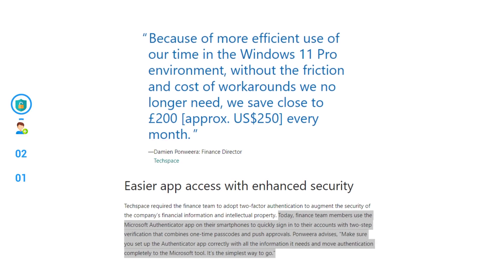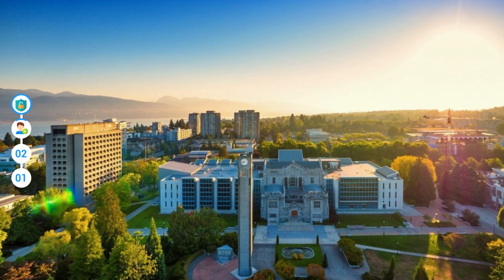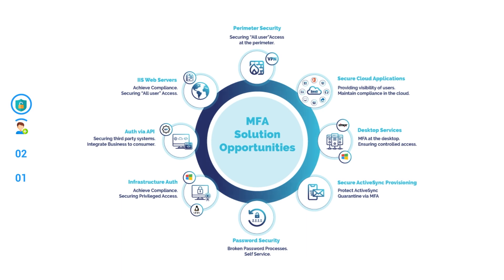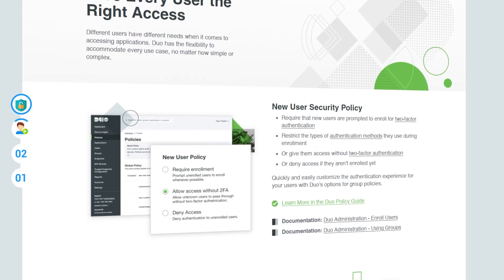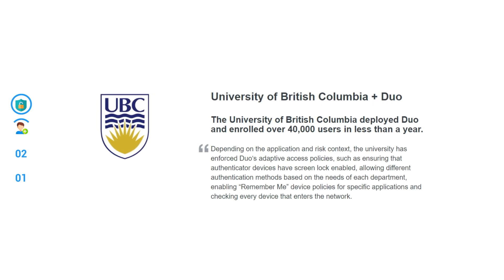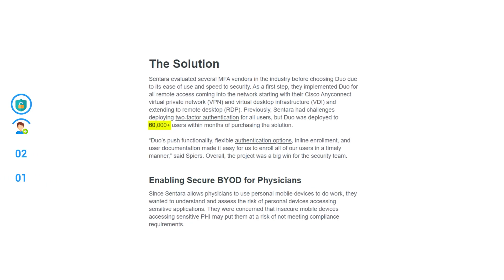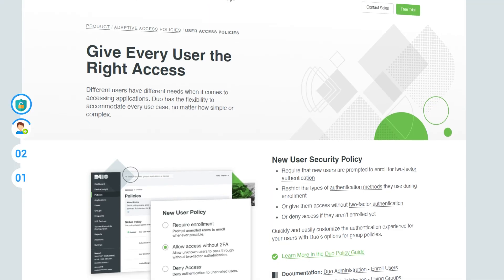Since these case studies are built into other Microsoft products such as the text-based story on adopting Windows 11, it is hard to tell whether the user experience is more about Windows or more about the Microsoft Authenticator. By comparison, Duo stands out for its seamless user enrollment process. For example, the University of British Columbia needed a robust MFA solution that could handle a wide variety of applications and protocols. Duo's customizable authentication policies and easy-to-use enrollment process enabled them to enroll over 40,000 users within one year.